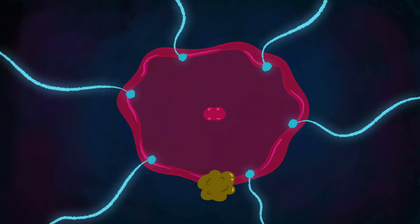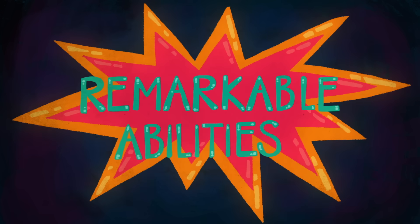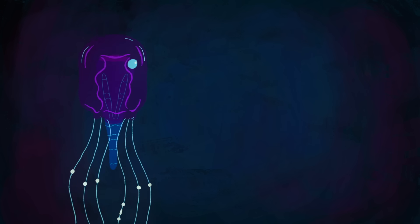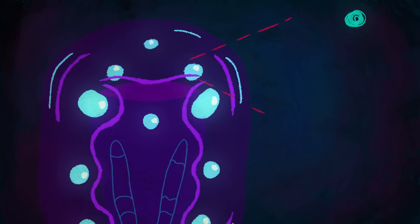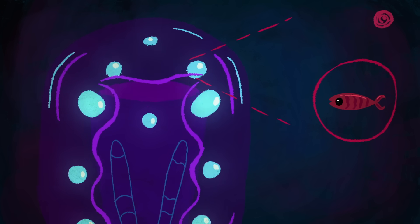But the jellyfish's relatively simple anatomy doesn't prevent it from having some remarkable abilities. One kind of box jellyfish has 24 eyes. Scientists think it can see color and form images within its simple nervous system.